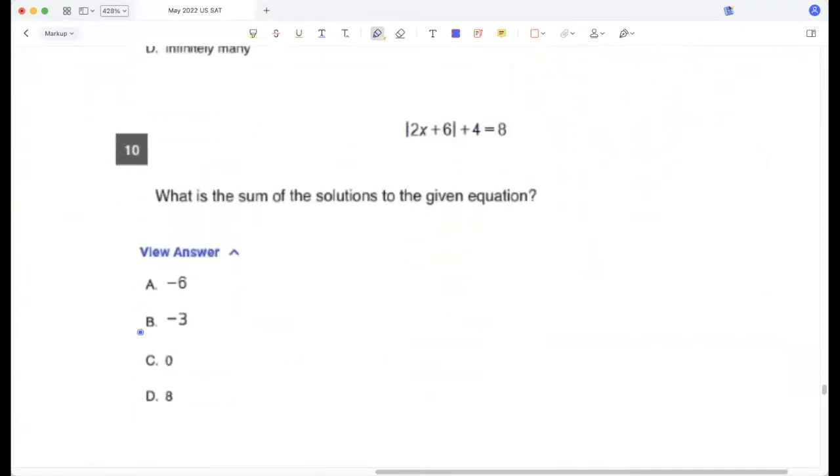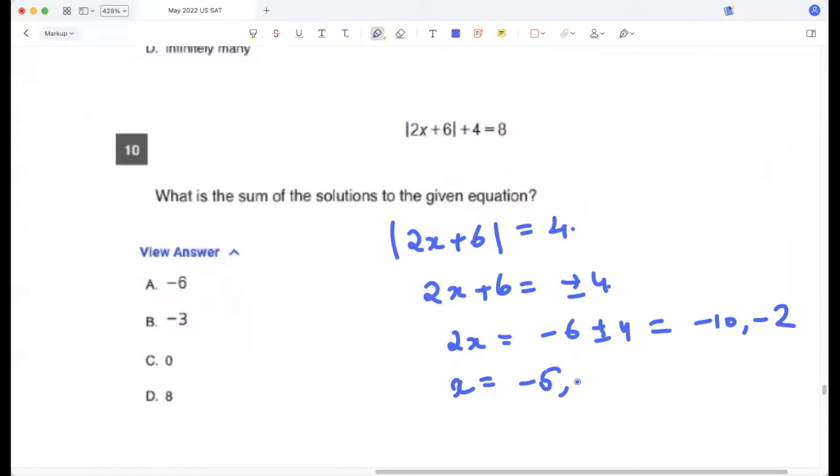What is the sum of the solutions of this equation? Absolute value of 2x plus 6 is 4. So 2x plus 6 is plus minus 4. So 2x is minus 6 plus minus 4, which is minus 10 and minus 2. So x is minus 5 and minus 1. So the sum is negative 6.